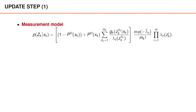We first recall the measurement model, ignoring the terms outside the brackets that do not depend on x_k. 1-p_d represents the hypothesis that the object is undetected, whereas the other m_k terms represent the m_k different hypotheses where one of the measurements is an object detection. We note that the measurement likelihood is a sum with one term for every possible association at time k.